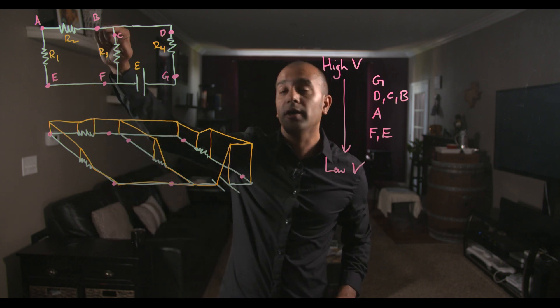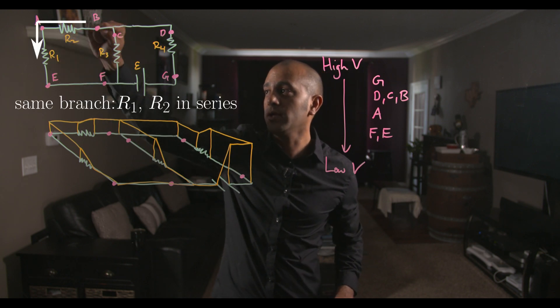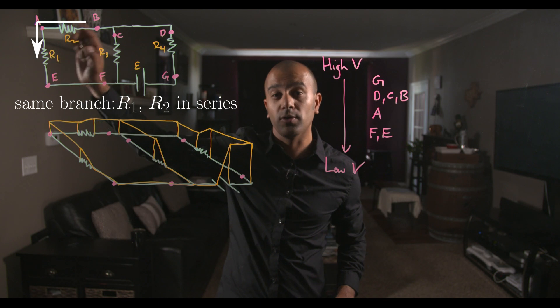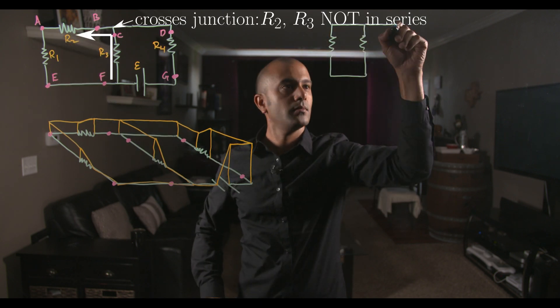However, R1 and R2, they are in series. And you know they're in series whenever they're on the same branch, and you can get from one resistor to the second one without crossing any forks in the circuit. So we're going to combine those first into our first diagram.